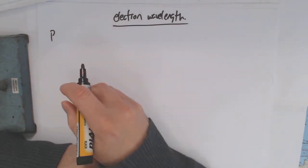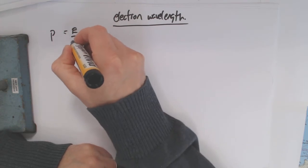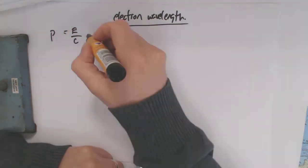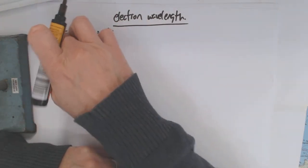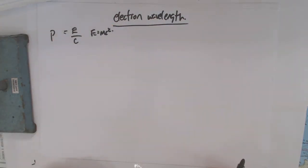Momentum, we'll use the symbol P, and what we can say is P is equal to energy over C. What we've basically said is E equals MC squared there, haven't we? E equals MC squared. MV squared equals E, or MC squared.